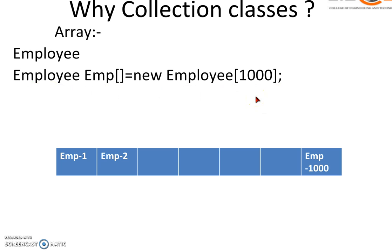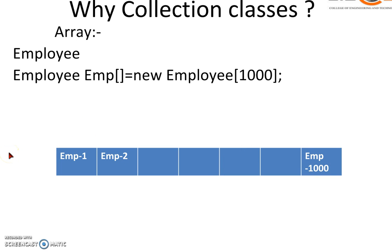This means we are creating a thousand objects under the class Employee. The first employee's data will be stored at position 0, the second at position 1, and so on up to position 999. To access these objects we use a common method called the index. This is the concept of arrays.